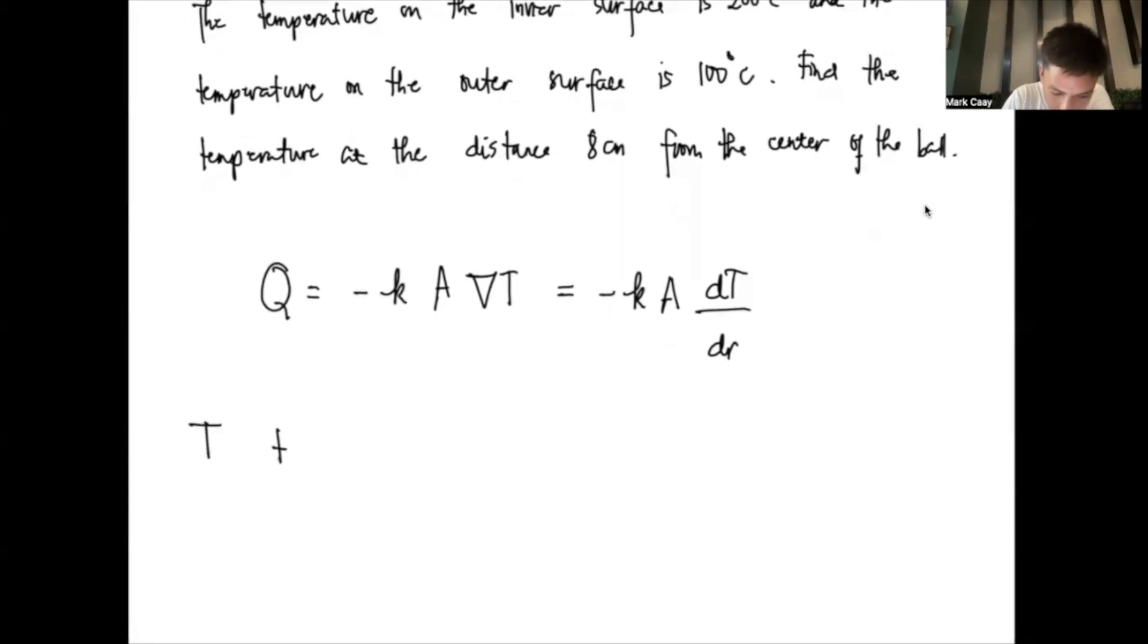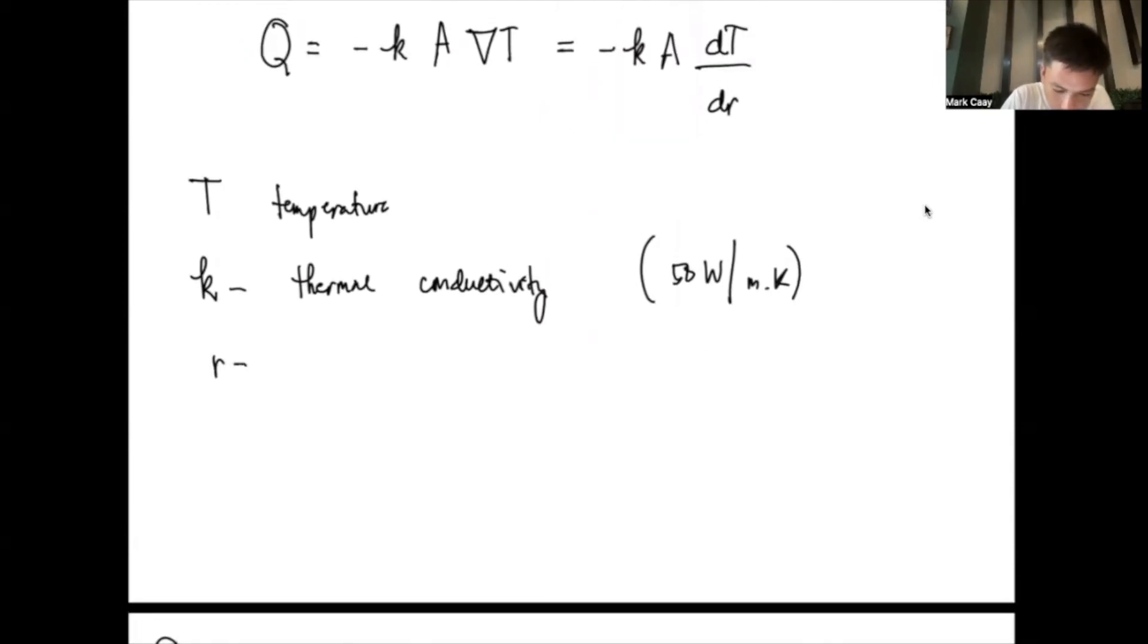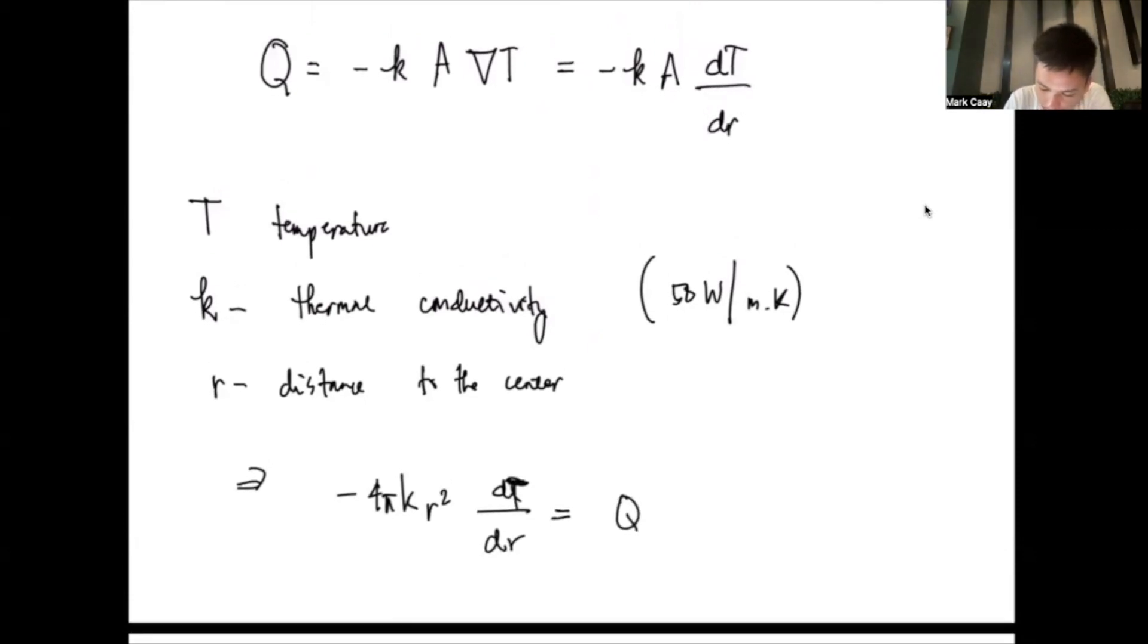Your T here is the temperature. This represents the gradient operator, and your K here is the constant. In physics, this is called thermal conductivity with a coefficient value of 15 watts per meter-Kelvin. And then, your r here is the distance to the center. So, because we are talking about a sphere, we'll have negative 4 pi K r squared dT/dr which is equal to Q. This represents the surface area because we know that the surface area is 4 pi r squared.